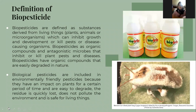Biopesticides are substances derived from living things like plants, animals, or organisms which can inhibit growth and development or kill pests or disease-causing organisms. Biopesticides include organic compounds and antagonistic microbes that inhibit or kill plant pests and diseases, and have organic compounds that are easily degraded in nature.